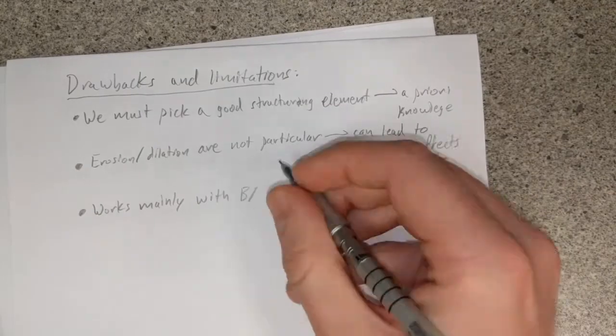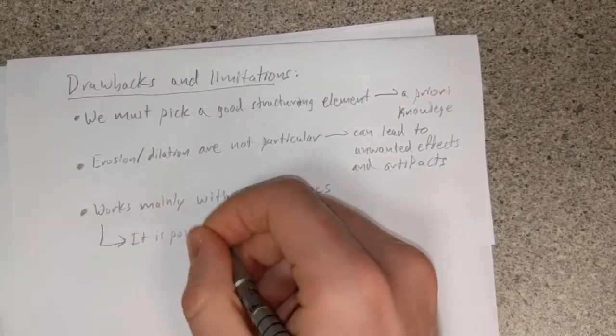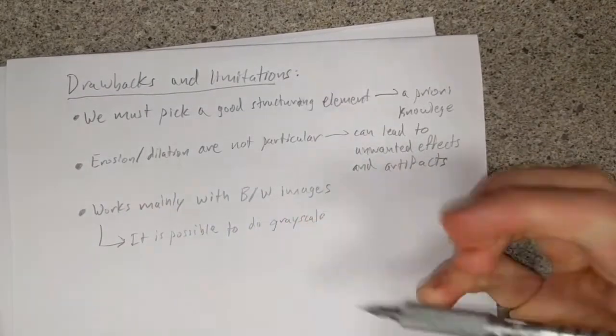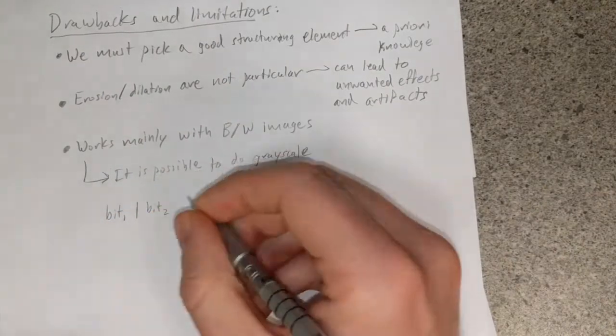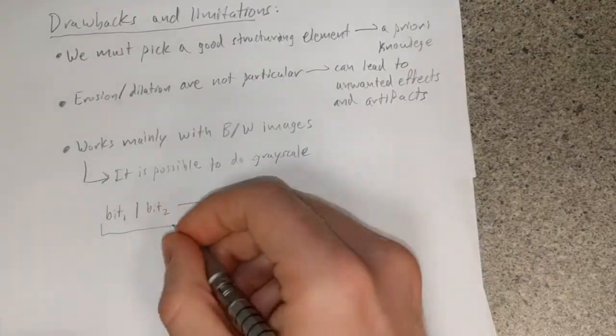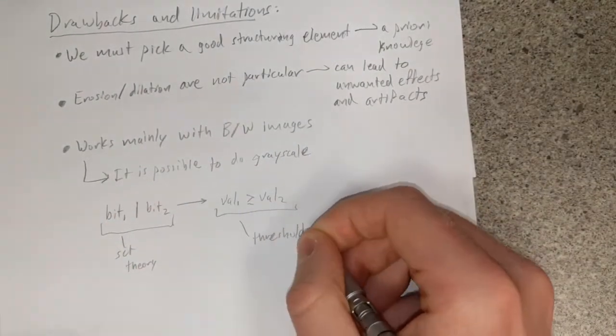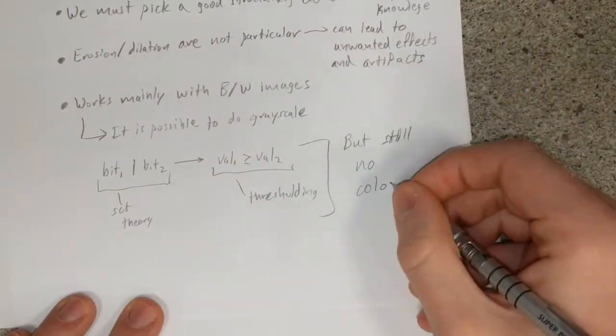Finally, these methods work best with black and white images and have no ability to work on color images. While it is possible to do grayscale by transitioning from bitwise operations to thresholding operations, this increases the complexity of the method.